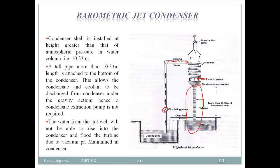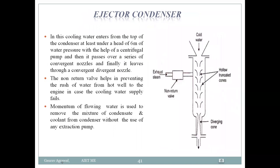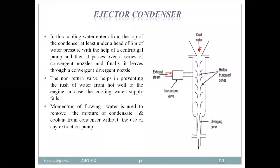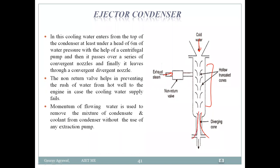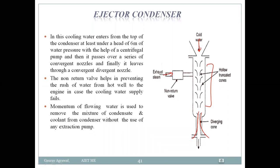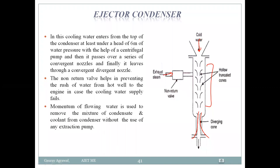Next is the ejector condenser. In this type, nozzles are used. Cold water and exhaust steam both enter the system, passing through a convergent nozzle followed by a divergent nozzle. A non-return valve is used so that water from the hot well does not rush back to the engine if the cooling water supply fails. The momentum of the flowing water is used to remove the mixture of condensate and cooling water from the condenser without an extraction pump.